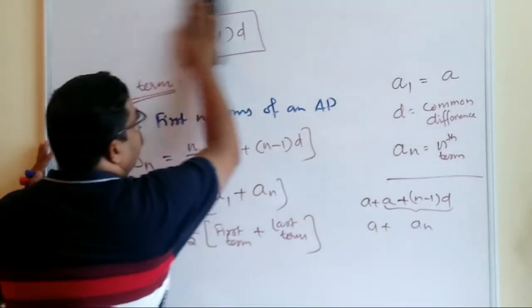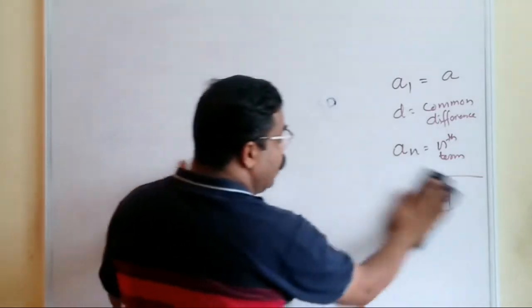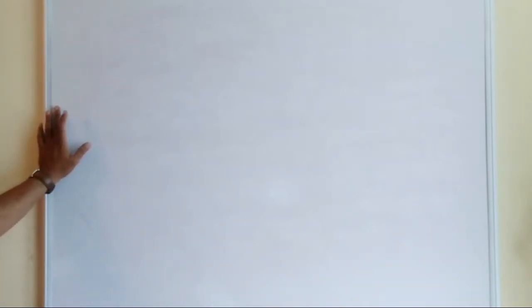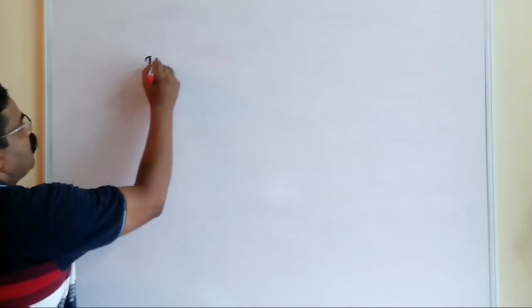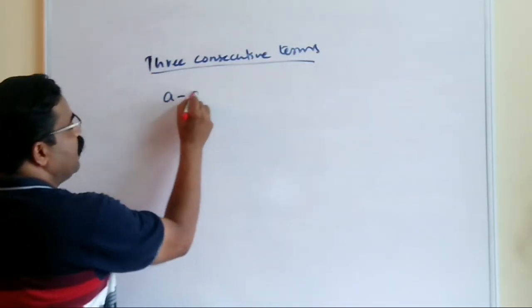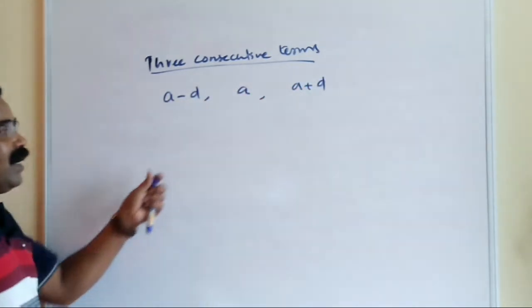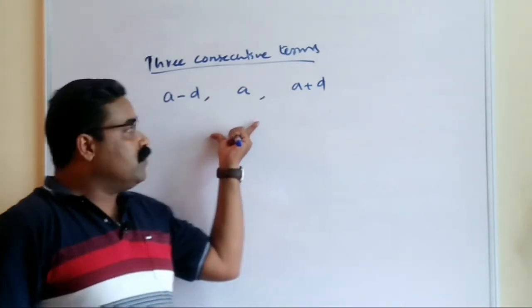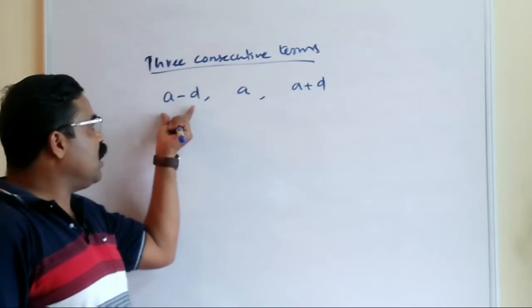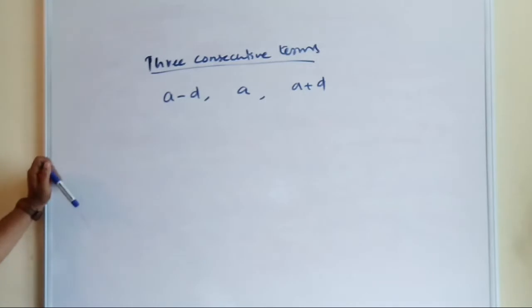Sometimes questions are asked about consecutive terms in AP. When three consecutive terms are in AP, always take them as (a−d), a, (a+d). This makes it easy to solve — when you add them: the −d and +d cancel, giving a + a + a = 3a, so you can easily find the value of 'a'. When four consecutive terms are in AP, take them as (a−3d), (a−d), (a+d), (a+3d).